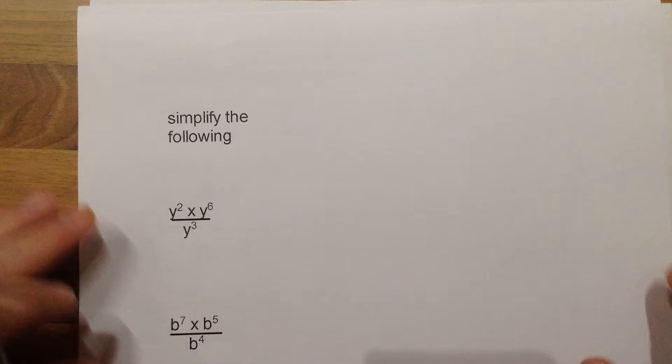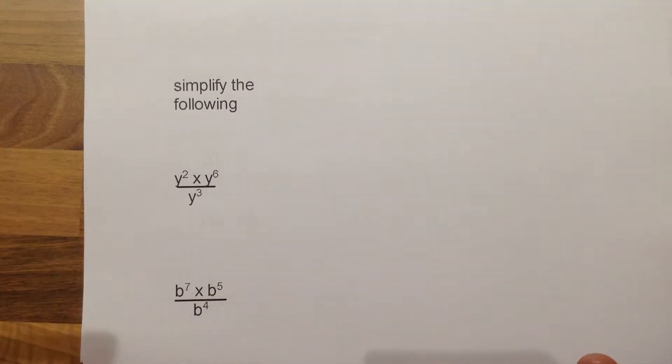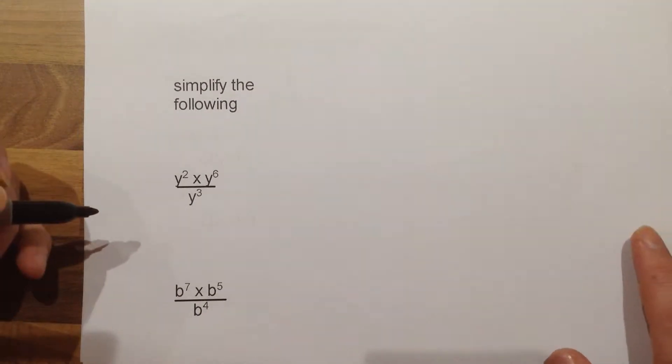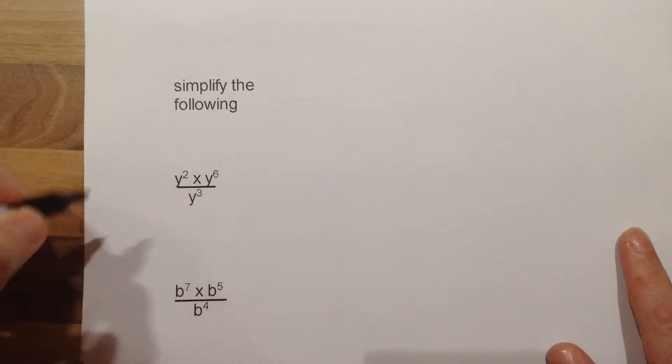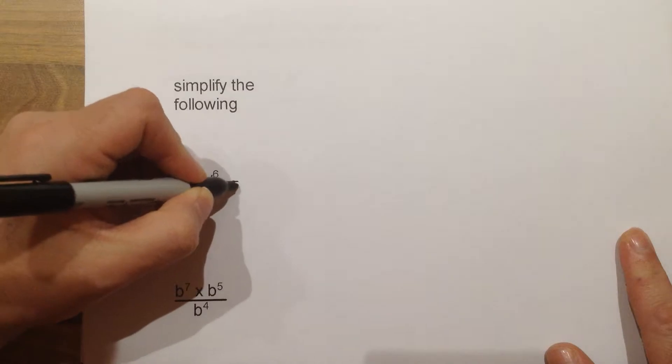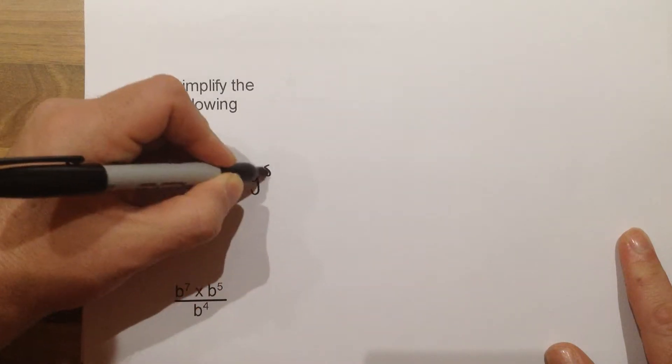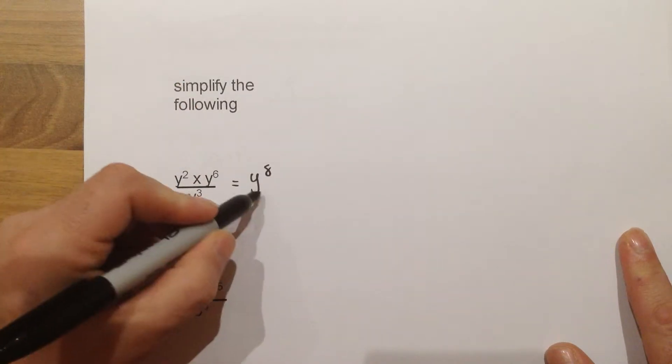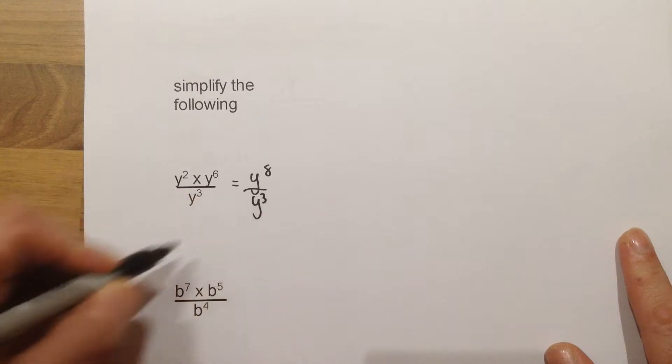Next topic, we are looking at simplifying some expressions using the index notation. If you are multiplying two things together, it means that you add the powers. So on top, this will become y to the power 8,